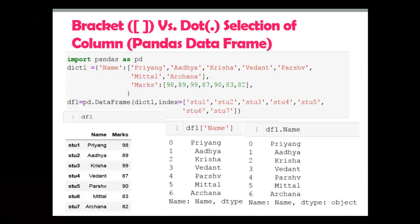Hello, in this video I am going to explain how we can select the column of a pandas DataFrame. In pandas we can select the column using bracket notation or dot notation.